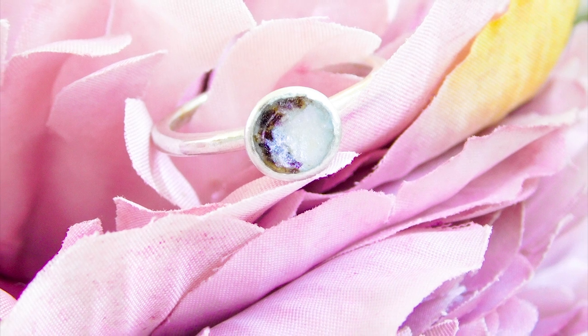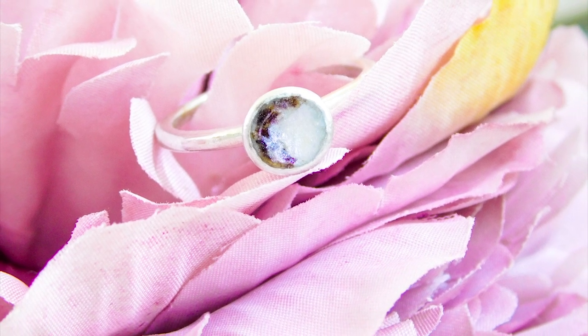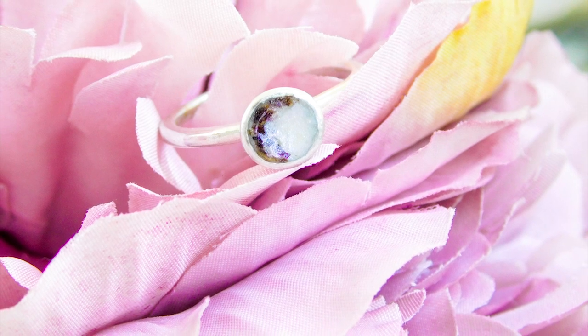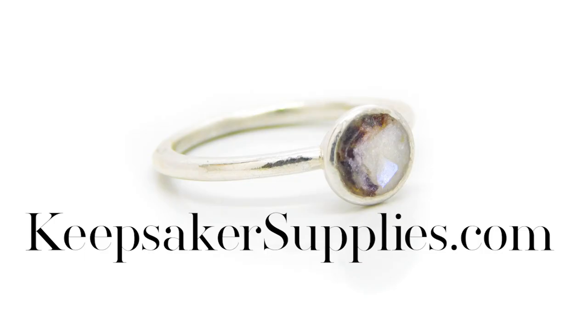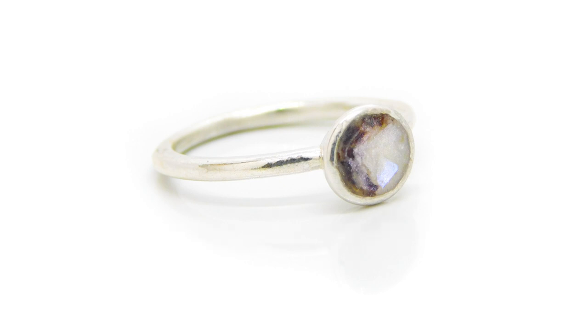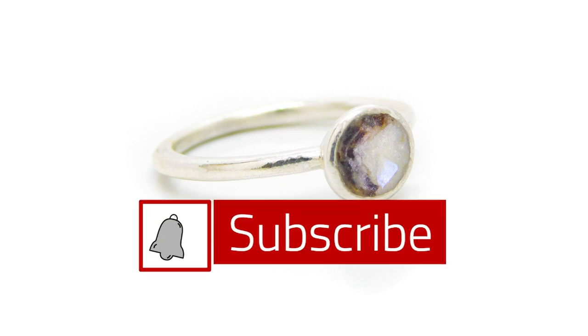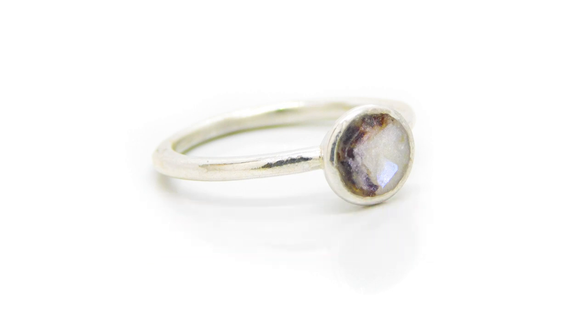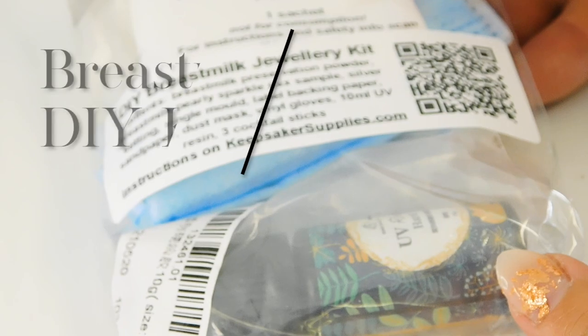I've used the crushed cord to create a crescent moon shape and added a subtle purple galaxy overlay. I sell most of the supplies on my website, keepsakeresupplies.com, including this exclusive Ayla ring setting, the breast milk preservation powder, and the sparkle mixers. If you're new here, just click subscribe and notifications to get alerts when I post new videos.